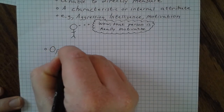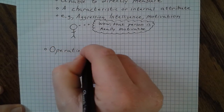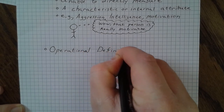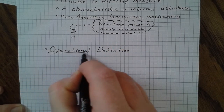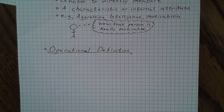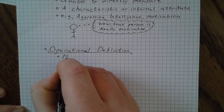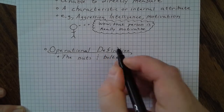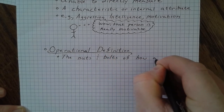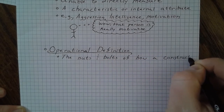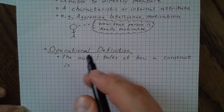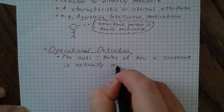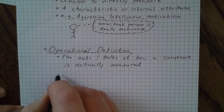Which brings us to operational definitions. An operational definition is a little different — it's really the nuts and bolts of how you're actually going to try and measure something. What are you really doing? What are you counting? What are you measuring? So it's the nuts and bolts of how a construct is actually going to be indirectly measured.